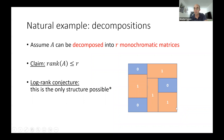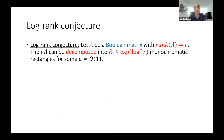Let A be an n-by-n boolean matrix with rank r, where r is much less than n — think of r as √n or log n or poly-log n. One way to construct such matrices: decompose A into r submatrices that are monochromatic (all-zero or all-one). Each submatrix has rank at most one, so the rank of A is at most r. The log-rank conjecture says that's essentially the only structure: given a boolean matrix of rank r, you can decompose it into quasi-polynomially many (say, r^{log r}) monochromatic rectangles.